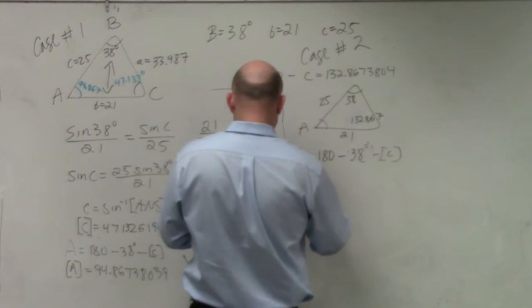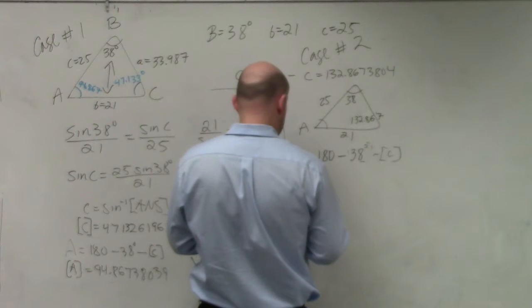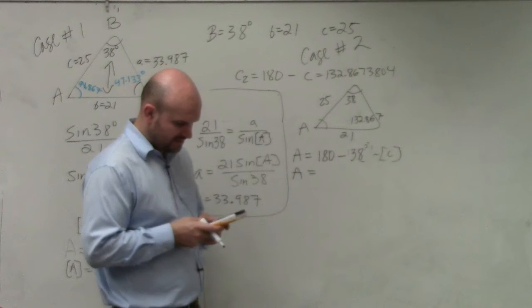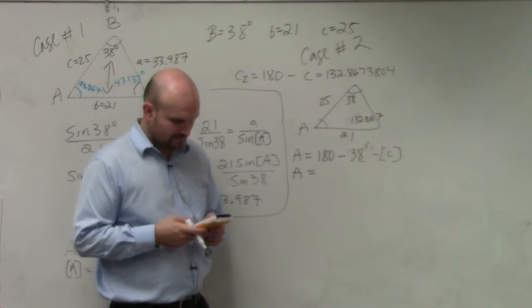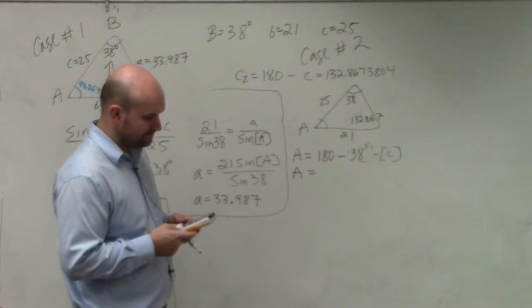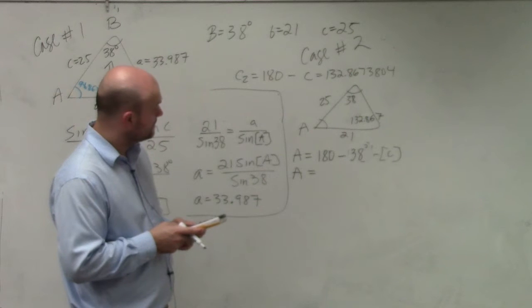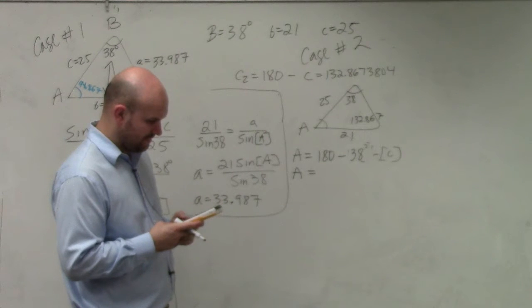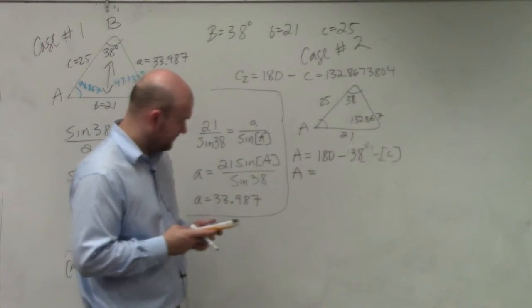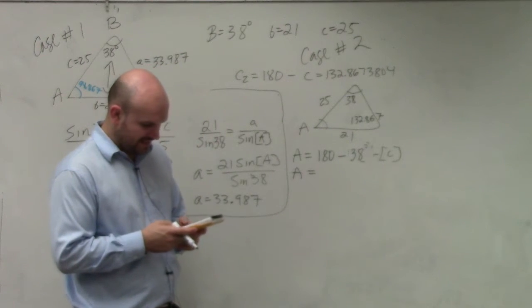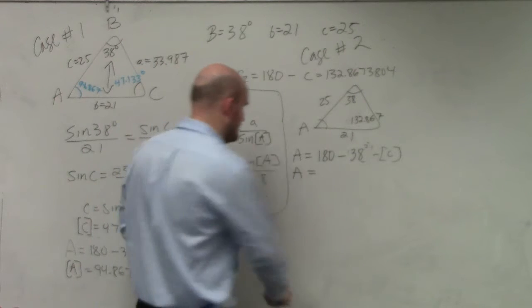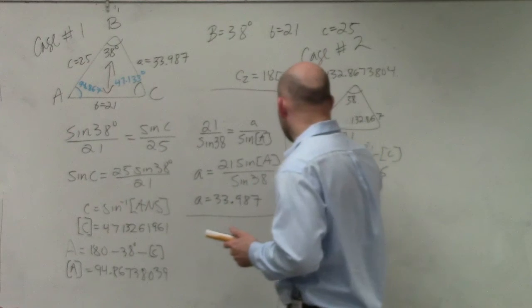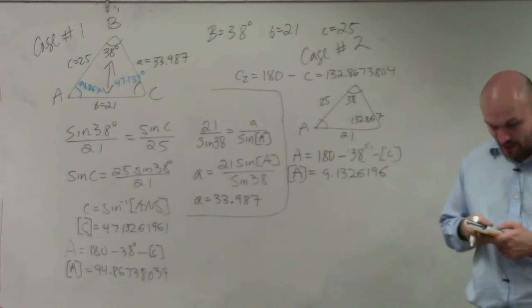So I do 180 minus 38 minus alpha C, and I get my new A is... I'm sorry, I didn't store that. Store alpha C. Good. 180 minus 38 minus alpha C. There we go. A is 9.1326196. Now I'm going to store that as my new A, so I'll hit store alpha A.